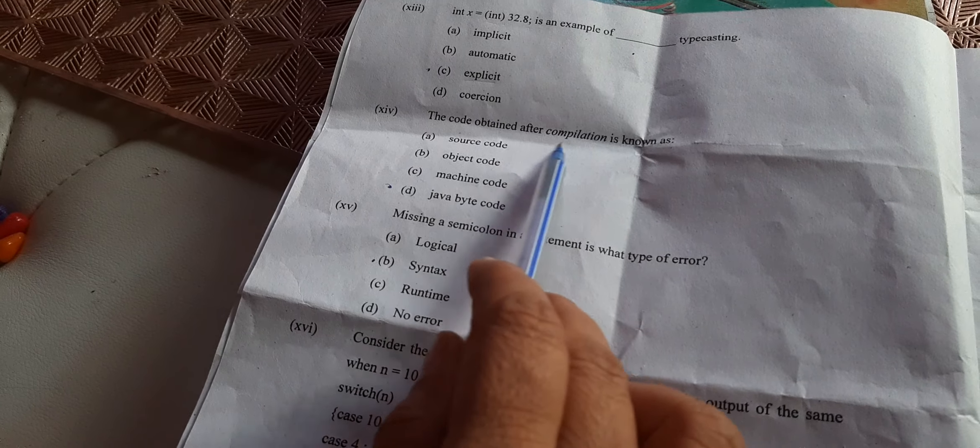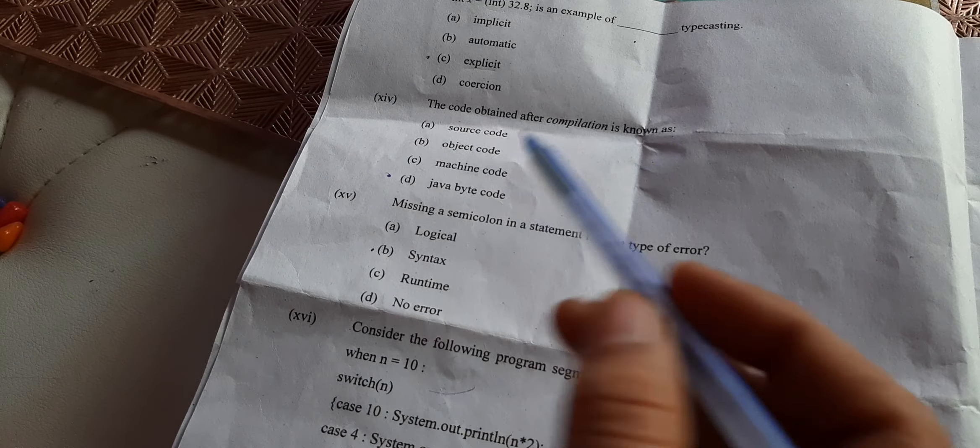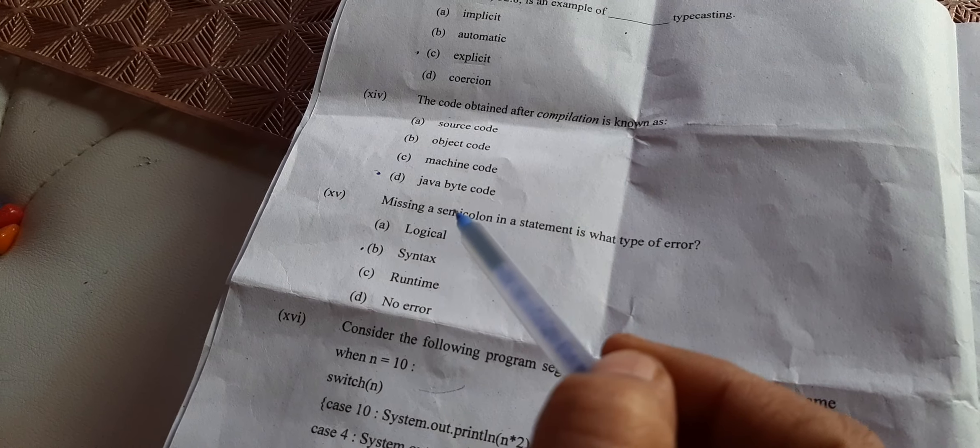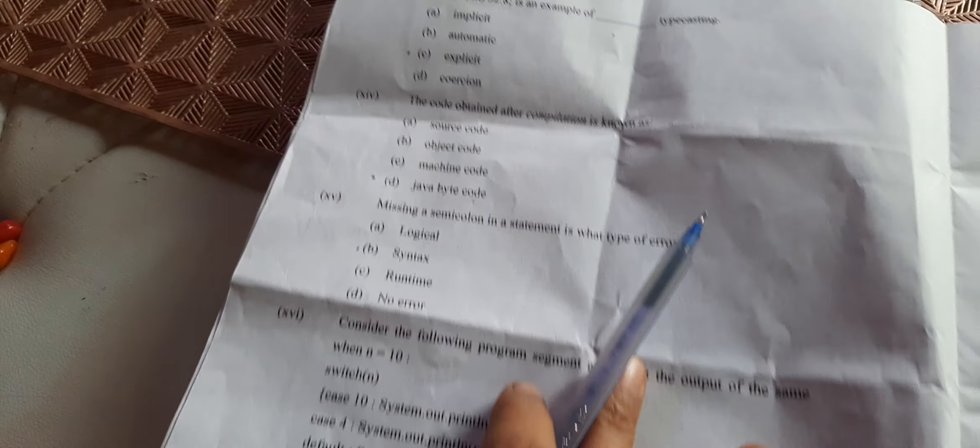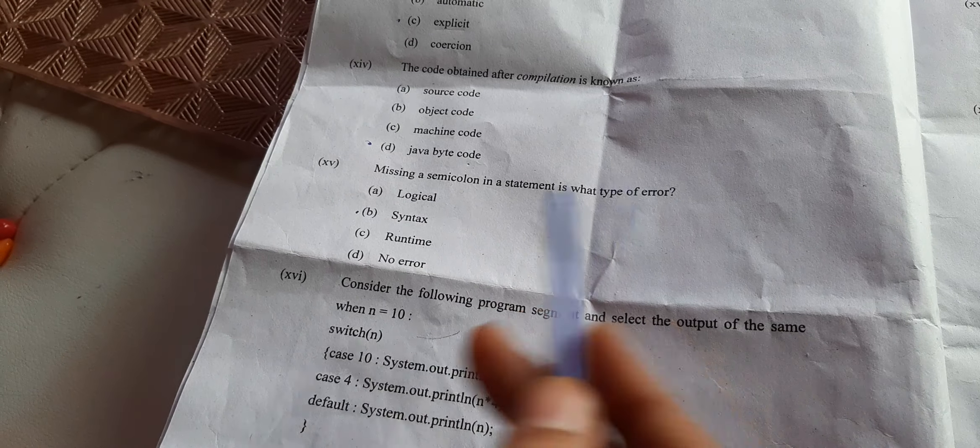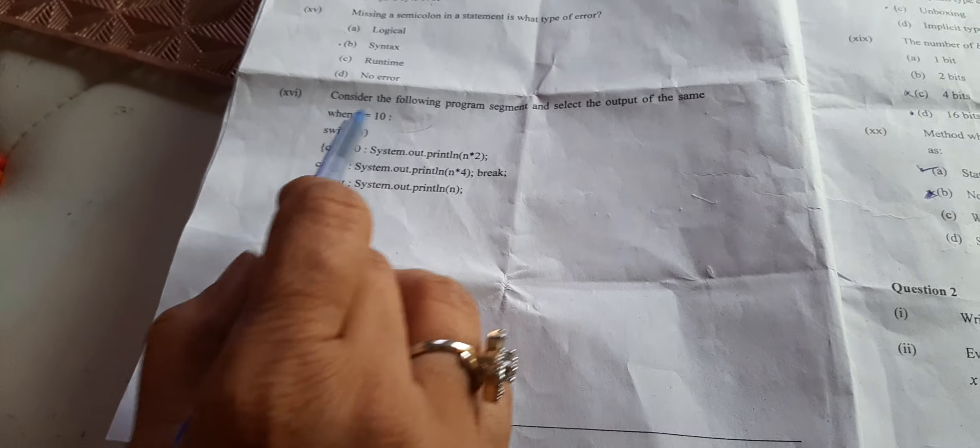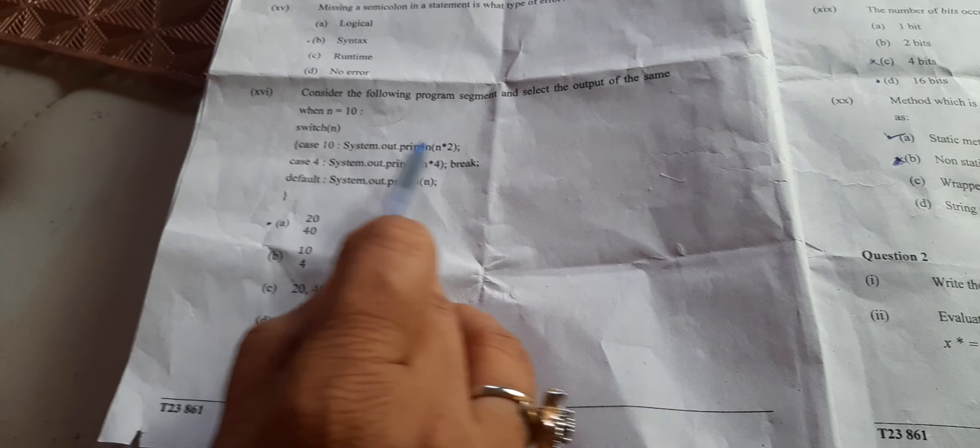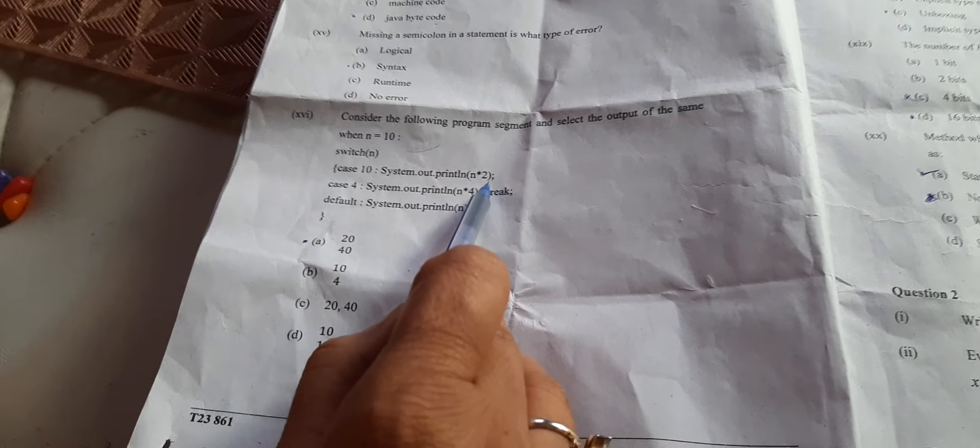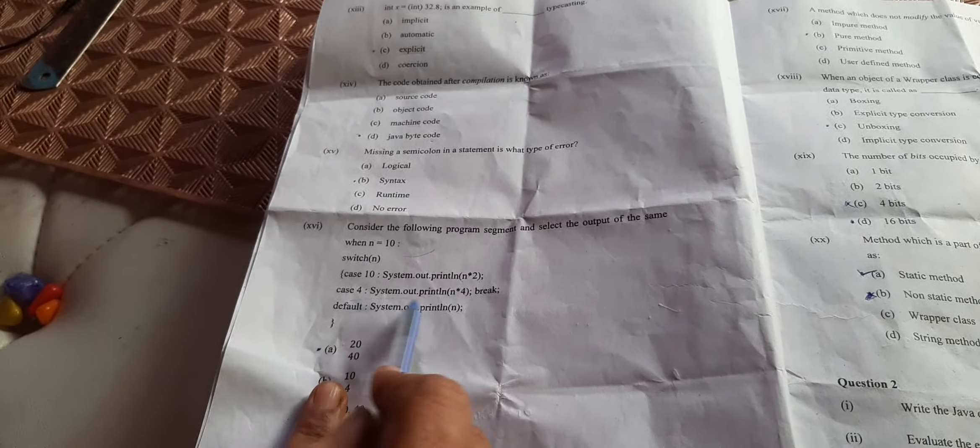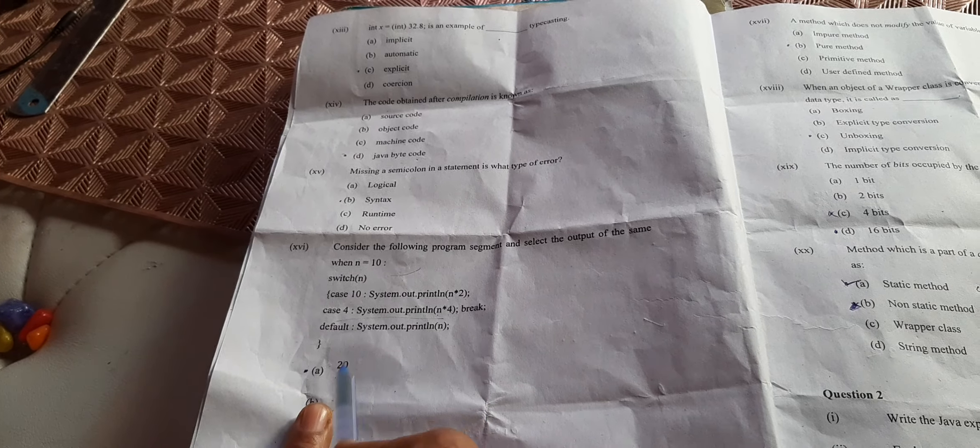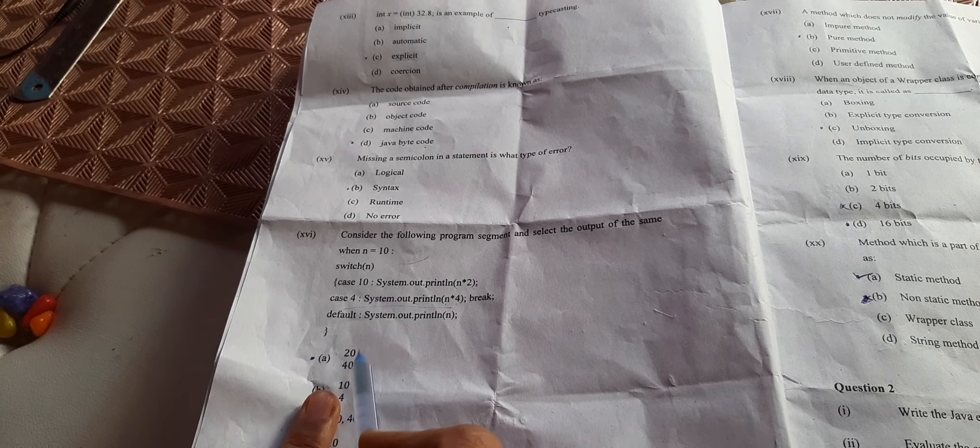Code obtained after compilation: Java source code is what we write in our language, then it is converted into byte code, so Java byte code is the correct answer. Missing a semicolon - it is a syntax error because we are writing wrong way. Consider the following program segment. Here n value is 10, so switch it will go to 10 case. 10 into 2 will be 20, so it will print 20. After that there is no break, so it will execute this case also. 10 into 4 is 40, so answer A1 is correct.